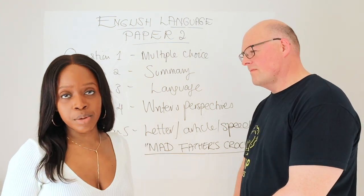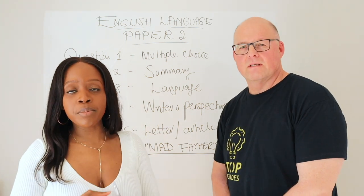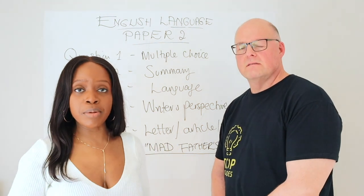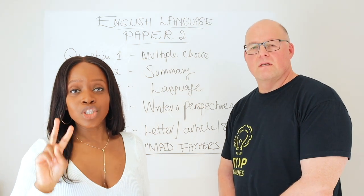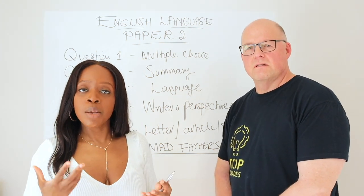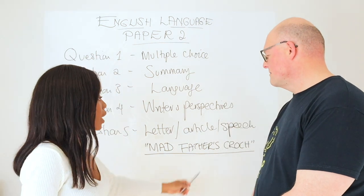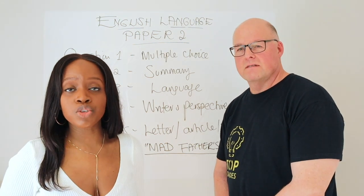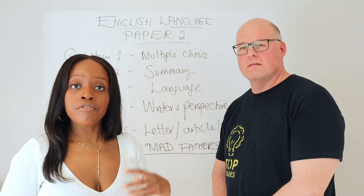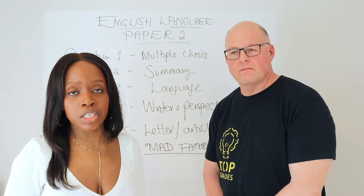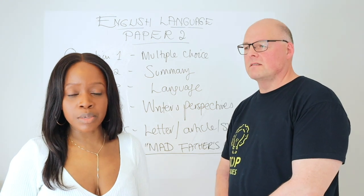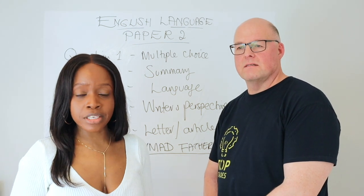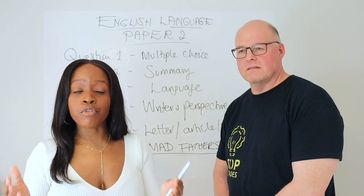For an article, start with a headline, then an opening paragraph setting out your argument, a first subheading introducing at least three main points for your perspective, a second subheading with two counter-arguments, and a concluding discussion. For a speech, show awareness of your audience — open with 'Ladies and gentlemen' for a general adult audience, or 'Fellow students' for a school audience. Then have a first paragraph setting up your discussion, three main points, two counter-points, and finish by thanking your audience.